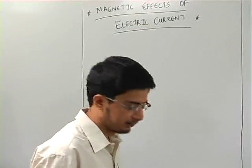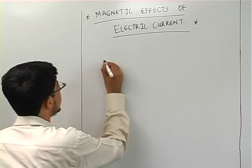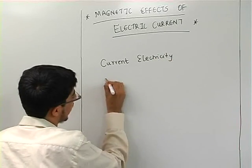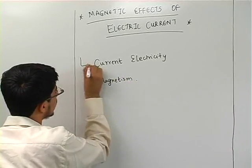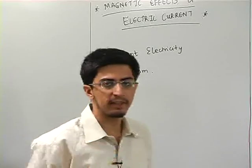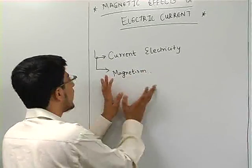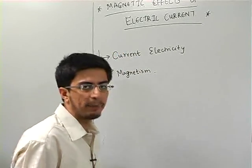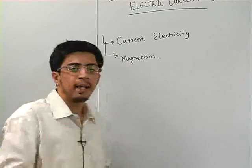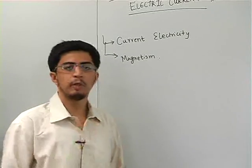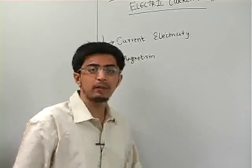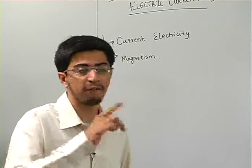The name 'Magnetic Effects of Electric Current' is basically derived from two chapters which we have studied earlier — that is, current electricity and magnetism. It is a relation between these two chapters. Magnetism and current electricity we have studied in earlier standards. This combination gives us the concept of magnetic effects of electric current.